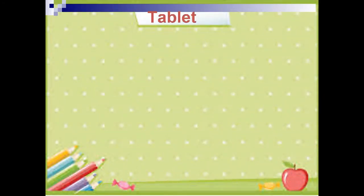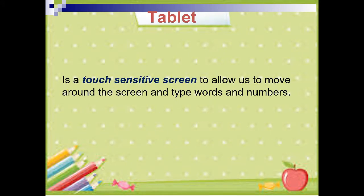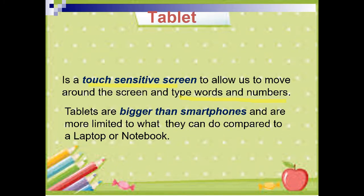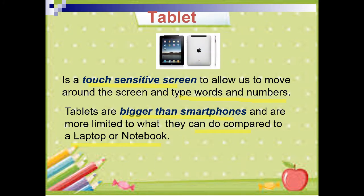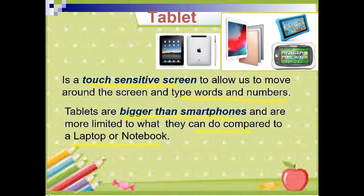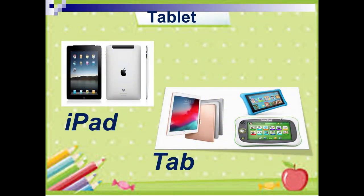Next, we have a tablet. A tablet has a touch-sensitive screen or touchscreen to allow us to move around the screen and type words and numbers. Tablets are bigger than smartphones and are more limited in what they can do compared to a laptop or a notebook. An example of a tablet is the iPad for Apple and the Tab for Samsung and other brands.